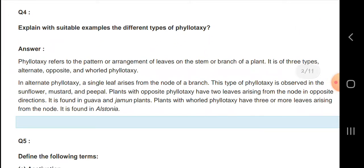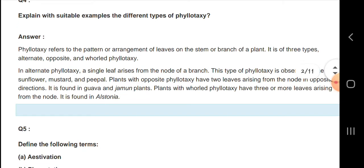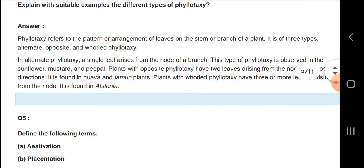Phyllotaxy refers to the pattern or arrangement of leaves on the stem or branches of the plant. There are three types: alternate, opposite, and whorled. In alternate phyllotaxy, a single leaf arises from the node of a branch.